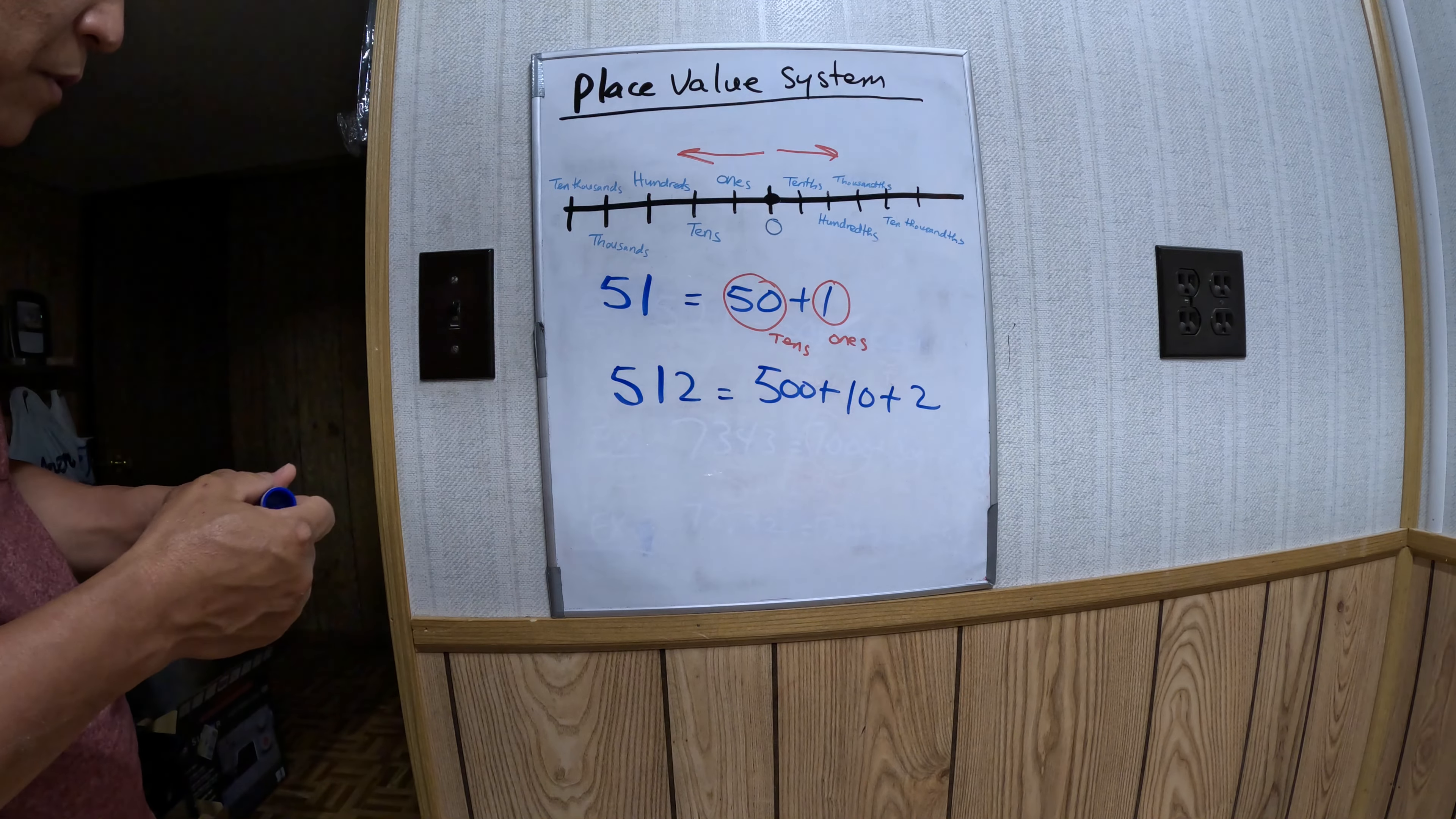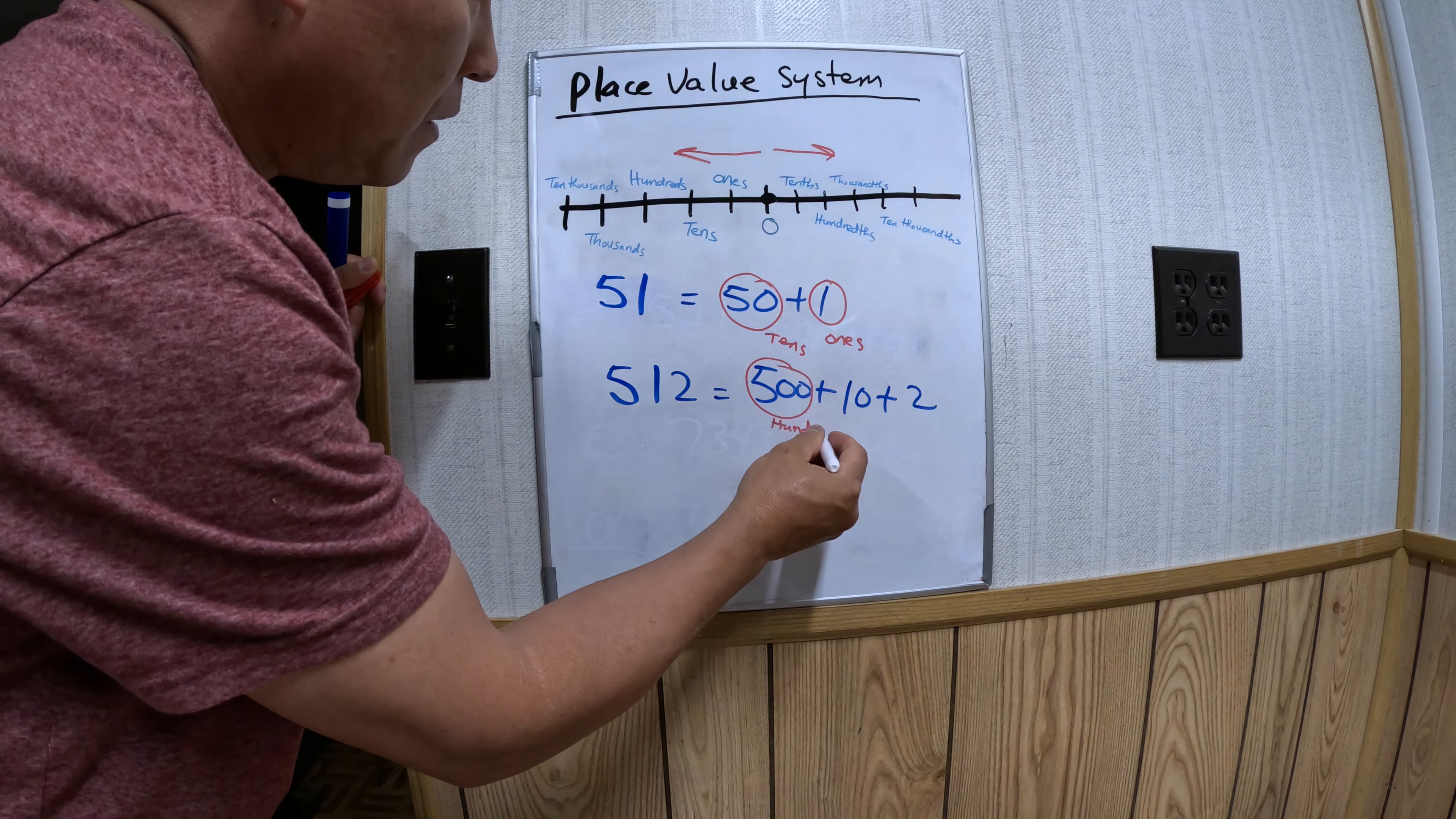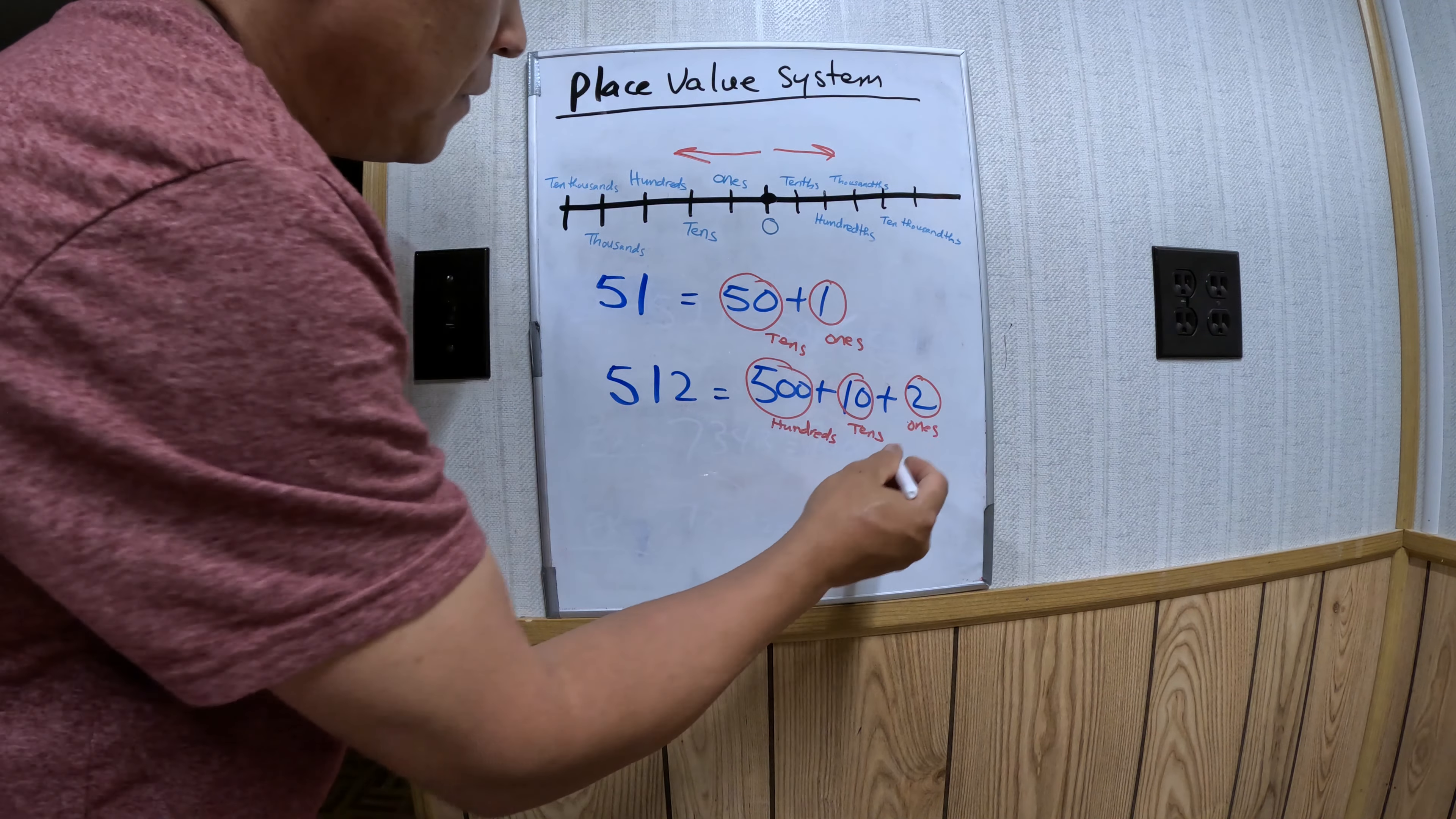This is the hundreds place, tens place, and ones place. Let's go to another example. If you have 5,123, that means 5,000 plus...